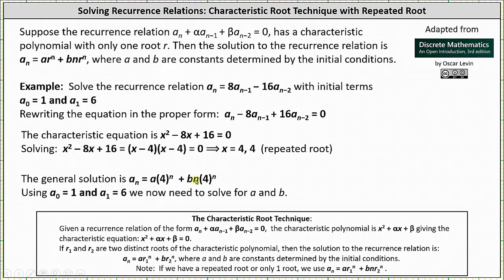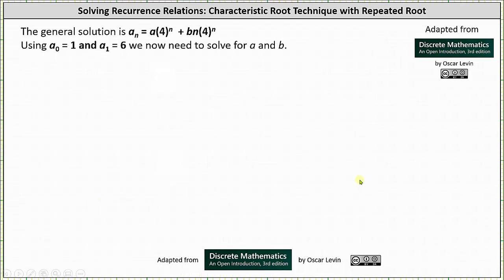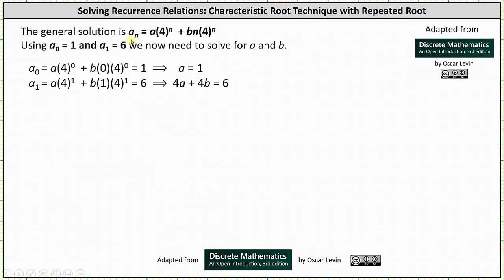Now we determine the values of a and b by setting up and solving a system of equations using the initial conditions a sub zero equals one and a sub one equals six. For a sub zero, n equals zero: a sub zero equals a times four to the power of zero plus b times zero times four to the power of zero, which equals one. The b term drops out and we get a equals one. For a sub one, n equals one: a sub one equals a times four to the power of one plus b times one times four to the power of one, which must equal six. Simplifying, we get four a plus four b equals six.